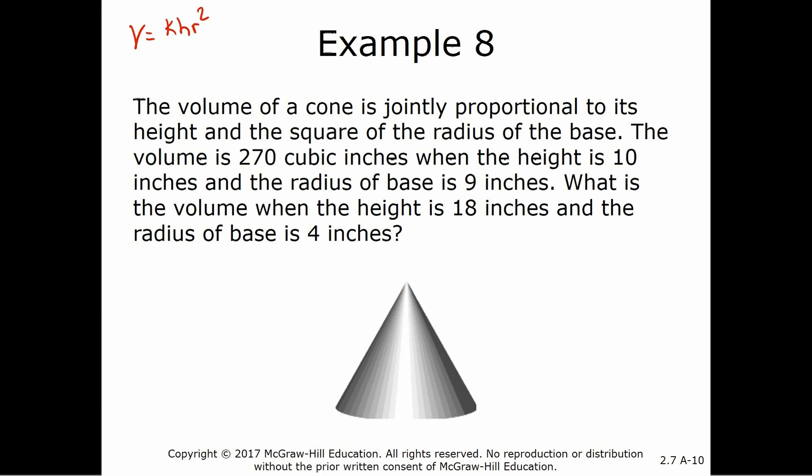So there's our formula. We're given the volume is 270 cubic inches when the height is 10 and the radius is 9. So 270 equals k times 10 times 9. So we're going to divide by 10. That gives us 27 equals k times 9. Divide by 9. k equals 3. So this means that I have volume is equal to 3h r squared.